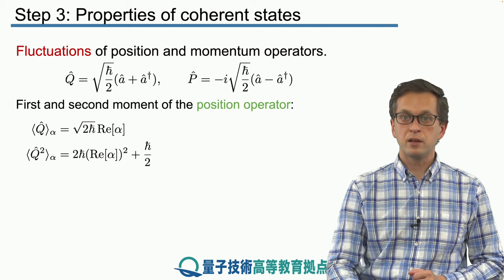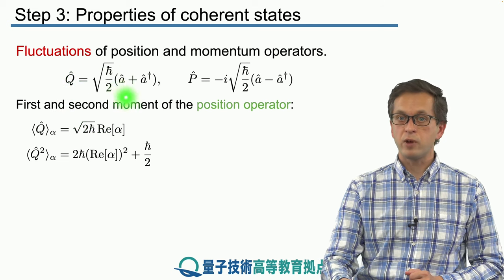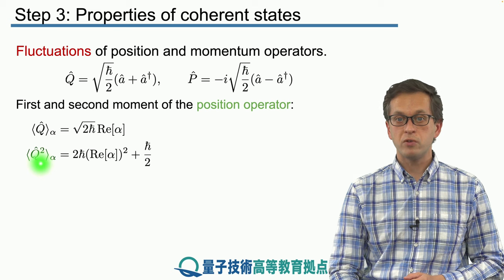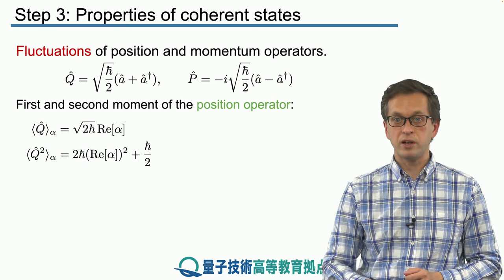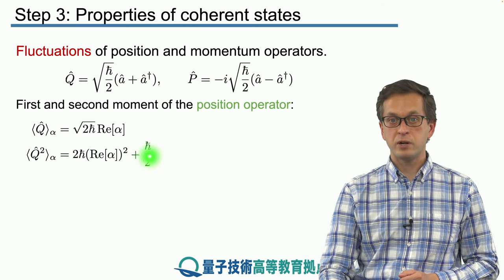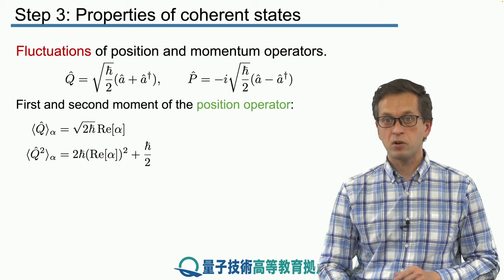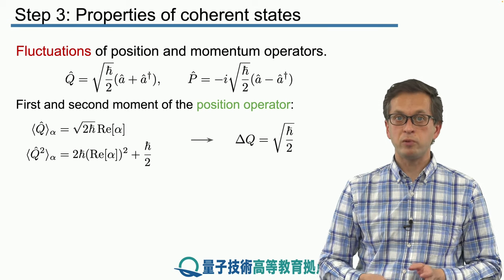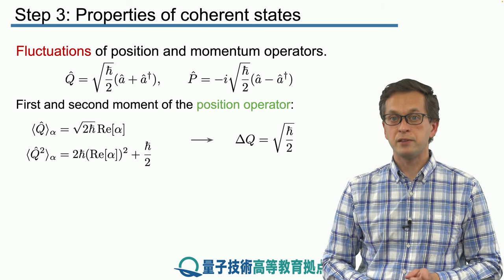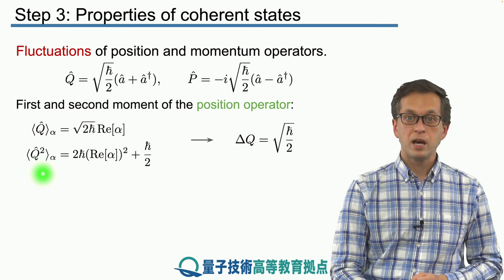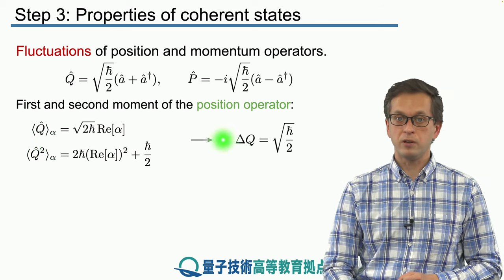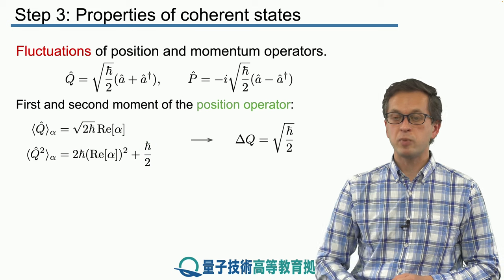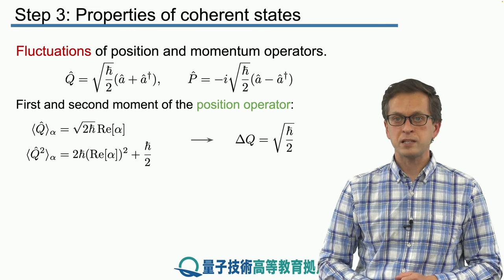Similarly, we consider Q squared. We expand by squaring it, and what we get is: the average of the second moment of Q is 2 h-bar times the square of the real part of alpha, plus an extra term h-bar divided by 2. That term appears because A and A-dagger do not commute and their commutator equals 1. Using these two moments, we compute the fluctuation of Q — the standard deviation. We take the average of Q squared minus the average of Q, squared, and these two terms cancel, leaving h-bar over 2, and we take the square root. That is our fluctuation for Q.